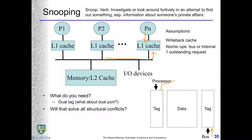Does having dual tags solve all your structural conflict problems? Actually, no. Because when you want to change the tag — either from the processor side or from the bus side — you need to write to the tag to set it to invalid or to set it to modified. You have to grab both tags and change both of them, otherwise they become incoherent with respect to each other. So you can't get rid of structural conflict completely — you can try to minimize it, but not eliminate it.